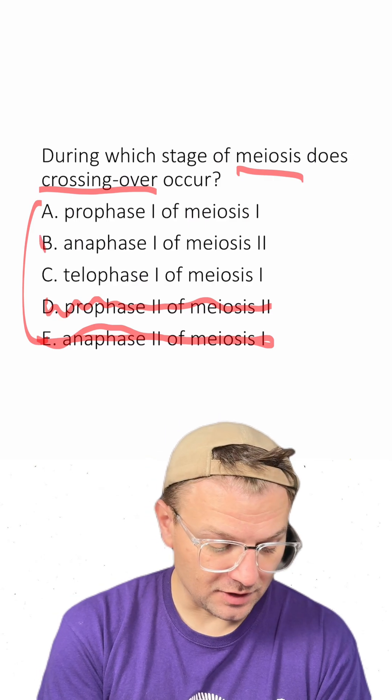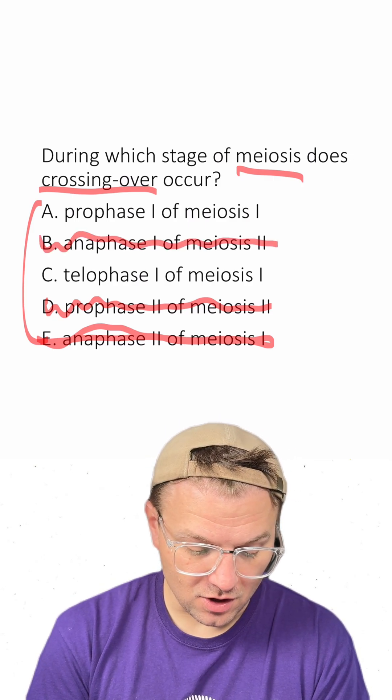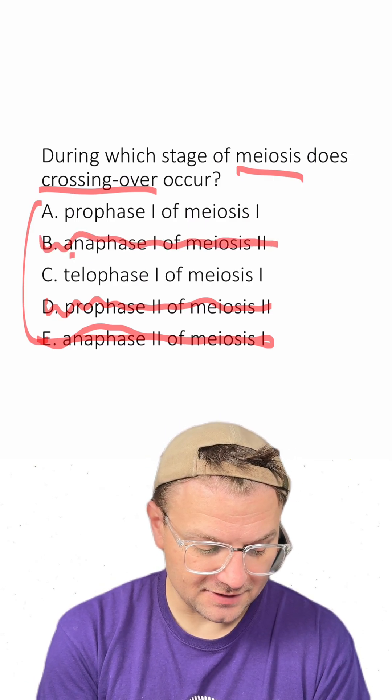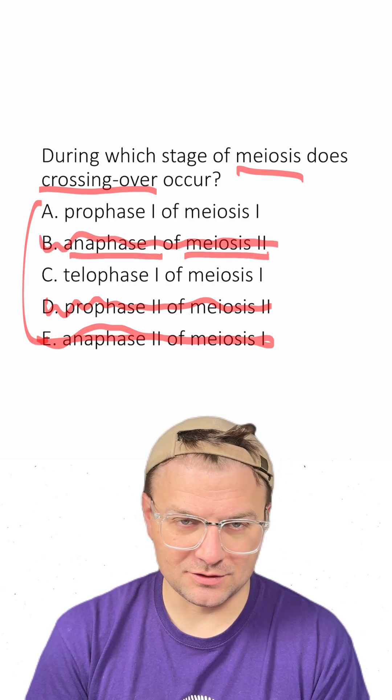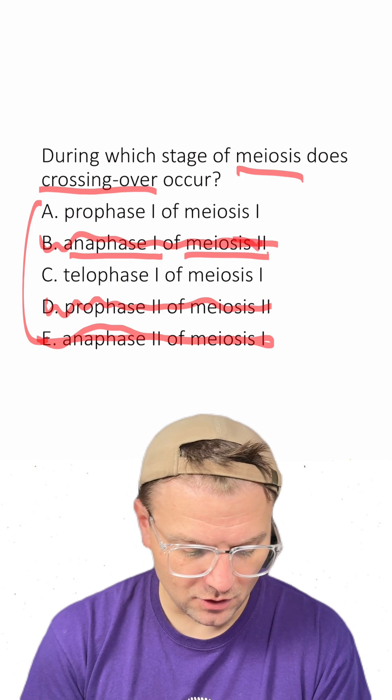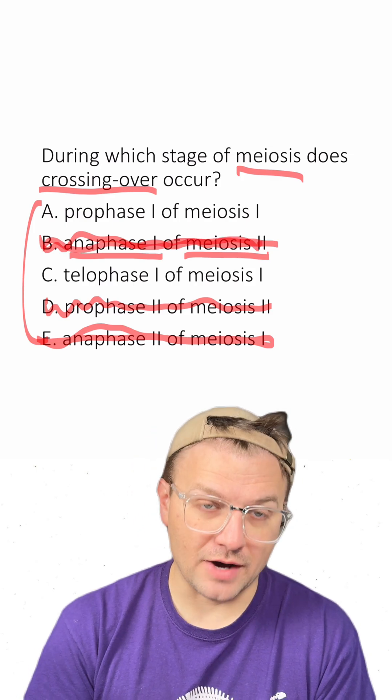B is also incorrect because anaphase I of meiosis II doesn't really even exist, so that one's also out.